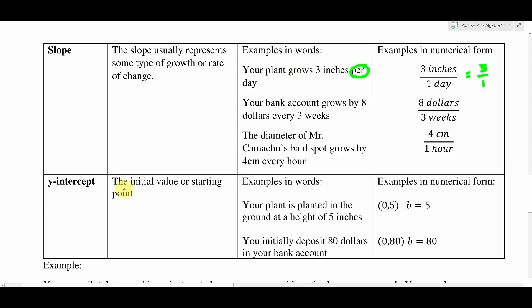The y-intercept is usually an initial value or a starting point for your story. So whatever the scenario is, there's usually a starting point that is described for you. If they're talking about the plant, they're probably talking about how tall the plant was when you bought it or when you planted it or something like that. In this one, it says your plant is planted in the ground at a height of 5 inches. So the plant starts at 5 inches and then grows 3 inches every day. So this is the starting point. So we would have a y-intercept of 0,5, which means our b-value is in fact 5. If we were talking about the bank account problem, it would be something like what did your bank account start off with. You'll see that word initially, or you'll see at the beginning or on day zero, something like that to indicate that they're giving you a starting point.